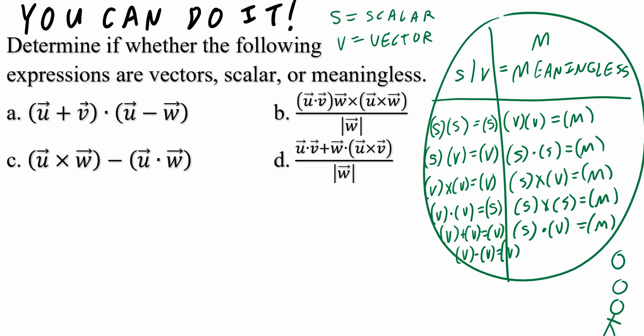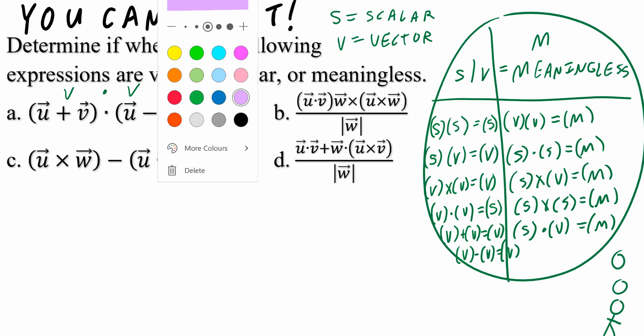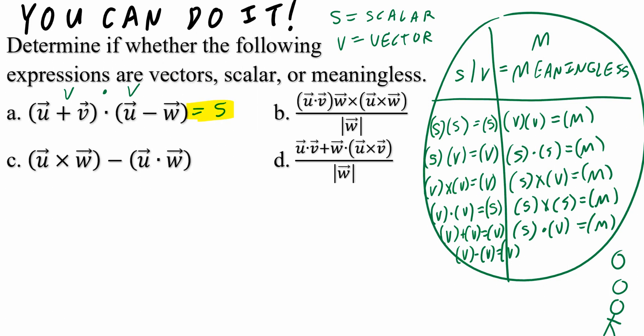Now that you have the major concepts, we're ready to look at parts A, B, C, and D. Part A: (vector U plus vector V) dotted to (vector U minus vector W). The sum of two vectors is a vector, and vector U minus vector W is still a vector. The dot product of two vectors equals a scalar outcome — so the answer is scalar.